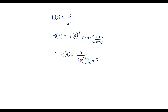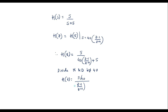Let me simplify this. For simplification, I will divide numerator and denominator by 40. Therefore H(Z) equals (5/40) divided by [(Z-1)/(Z+1) + 5/40]. Since 5/40 equals 0.125, we have 0.125 divided by [(Z-1)/(Z+1) + 0.125].